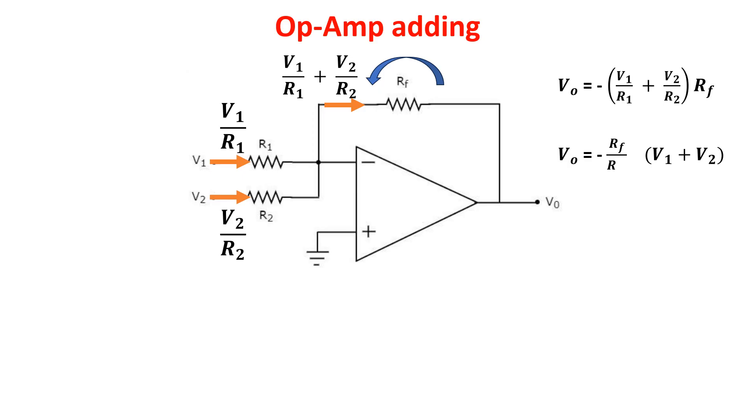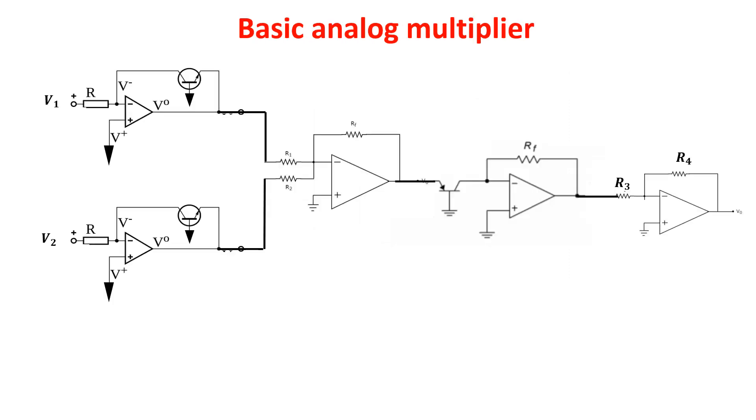Here, the basic analog multiplier using log and anti-log amplifier. In the first stage, we operate the log of the two input voltages. The second stage performs the sum and the third stage performs the antilog.